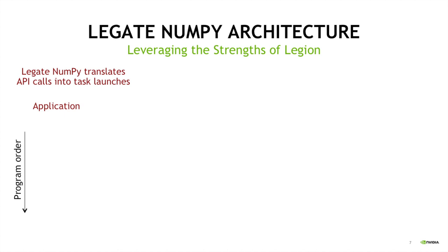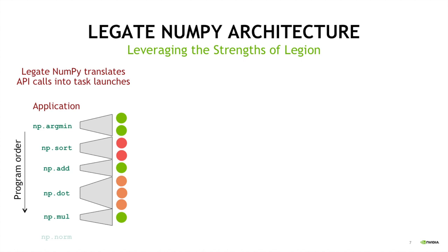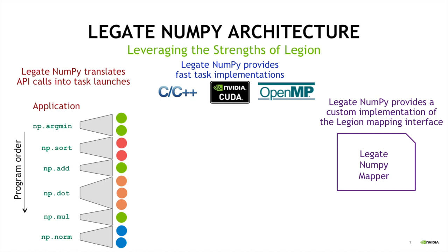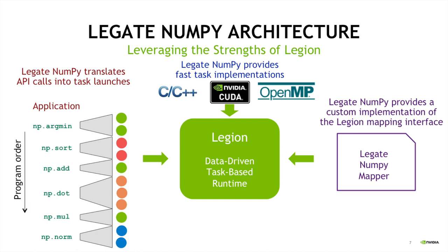When you're running a NumPy program with Legate NumPy, as you encounter NumPy API calls such as an add operation, you launch one or more tasks into the Legion runtime system. Legion is a task-based runtime system — that's how you run computations. Each API call can translate into one or more task launches. We'll have fast task implementations written in C++, CUDA, and OpenMP. We'll also have a Legate NumPy mapper that makes decisions about where tasks will run, where data will be placed, and enables portability across lots of different scales and machines.